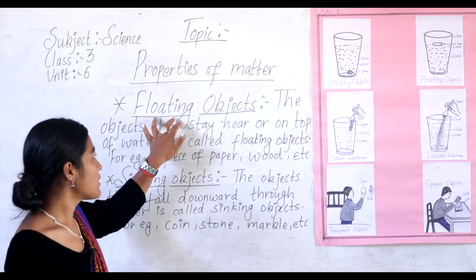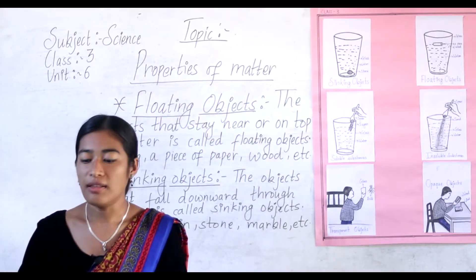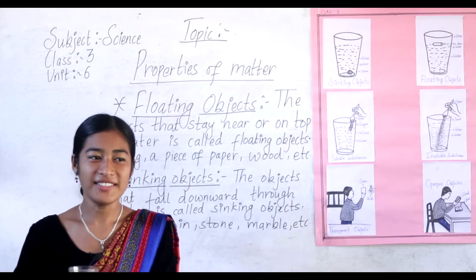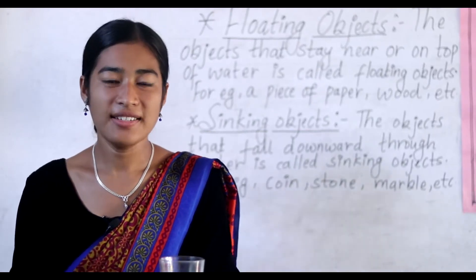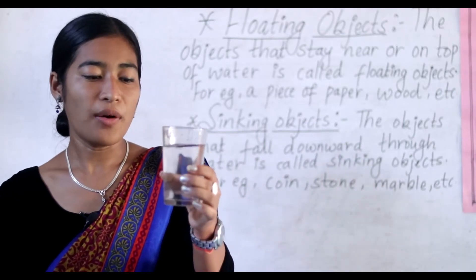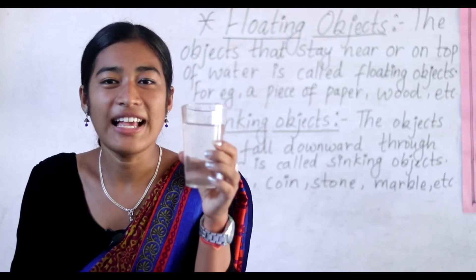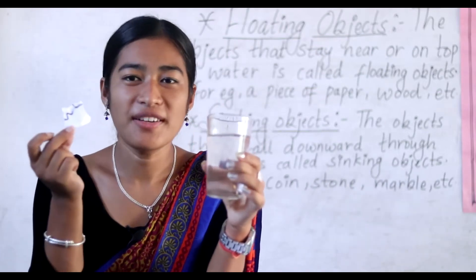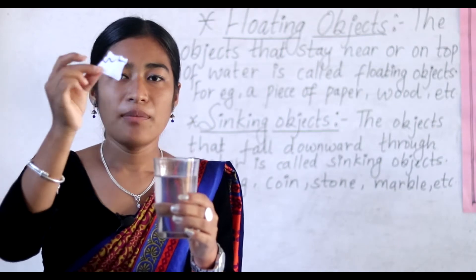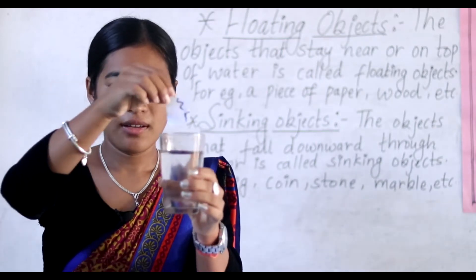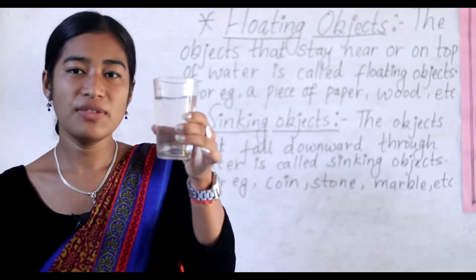The first topic is floating objects. Before we go through the topic, let's do some practical. Here is a glass of water and a piece of paper. Now I will put this piece of paper into the glass of water. Then what did you see?